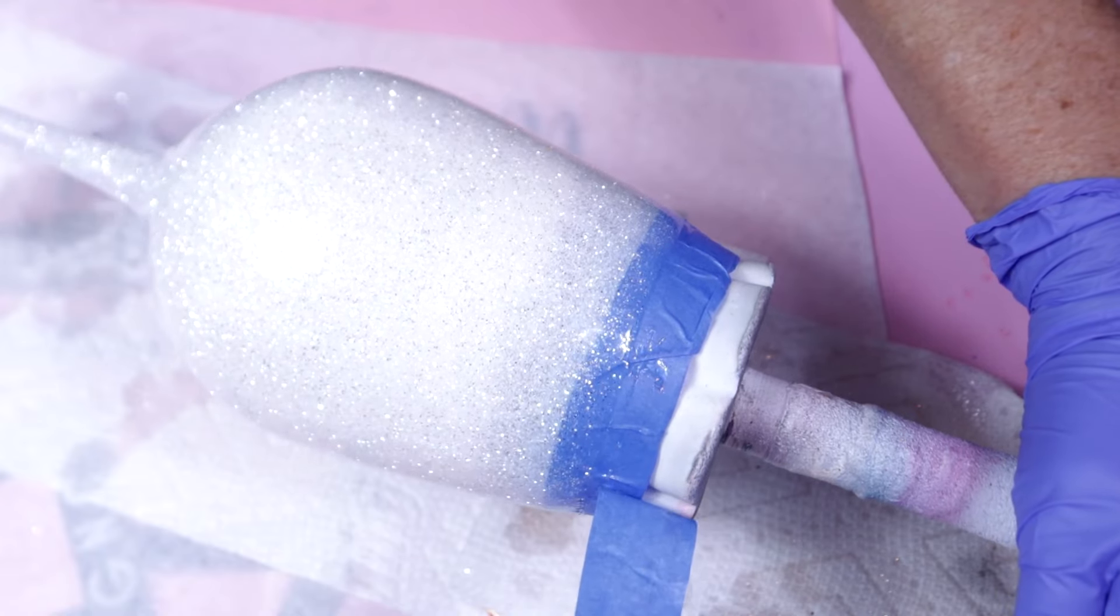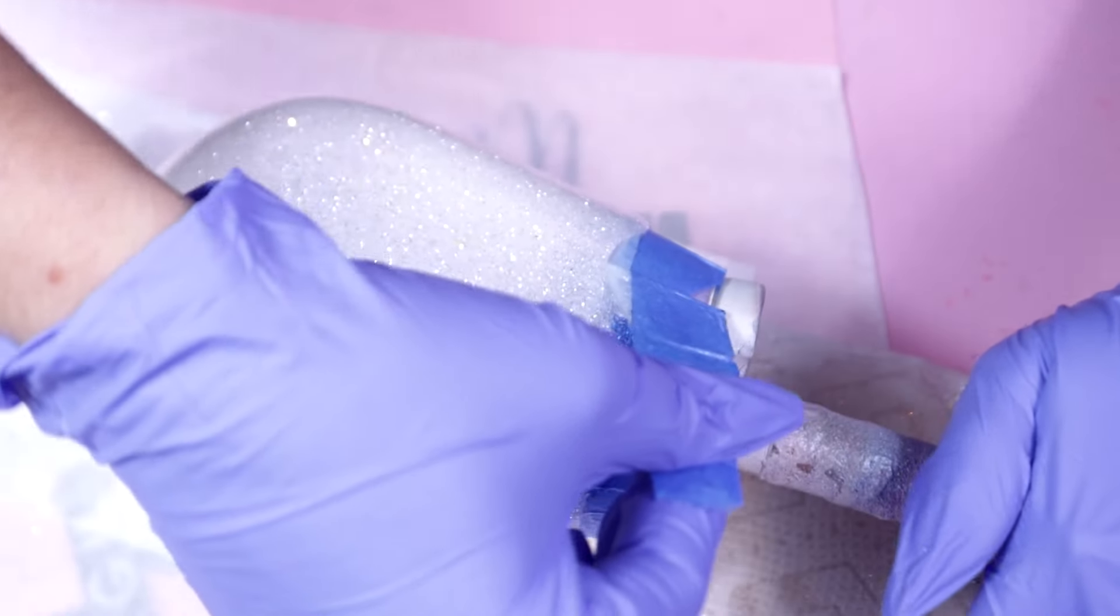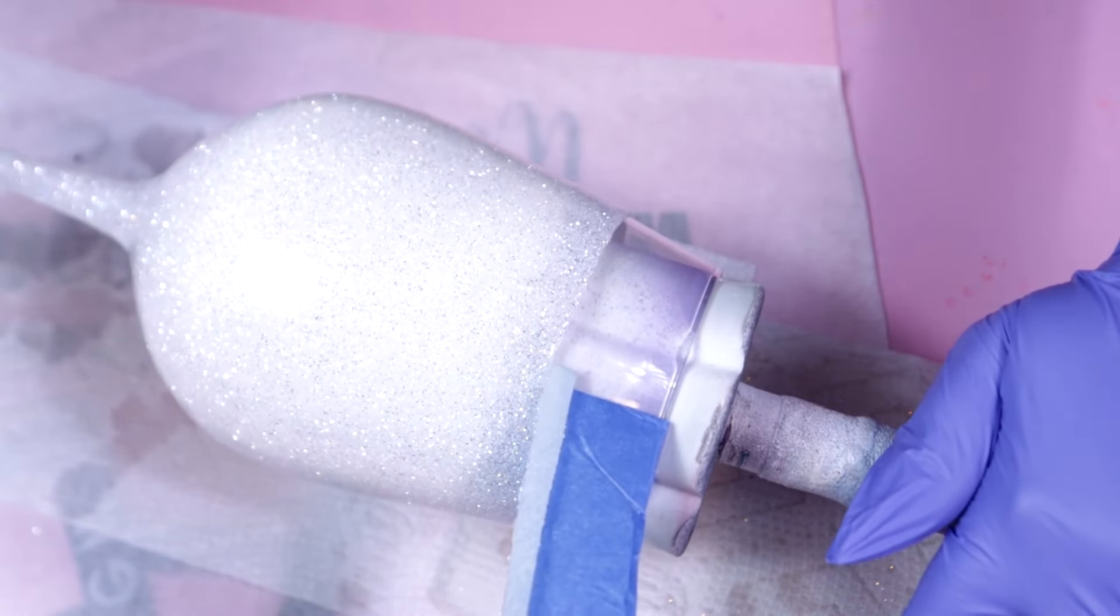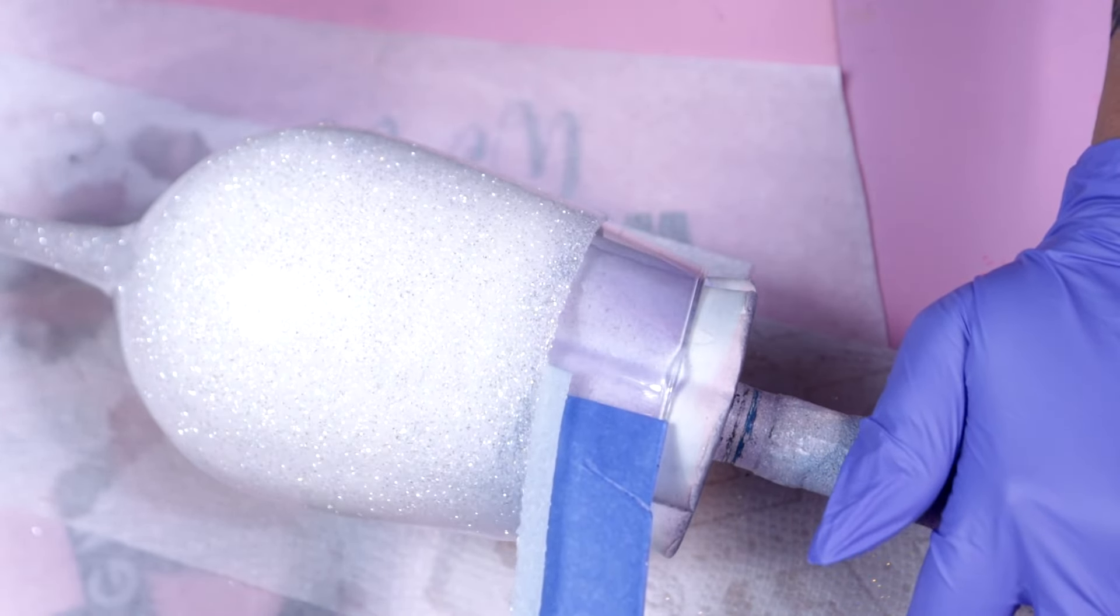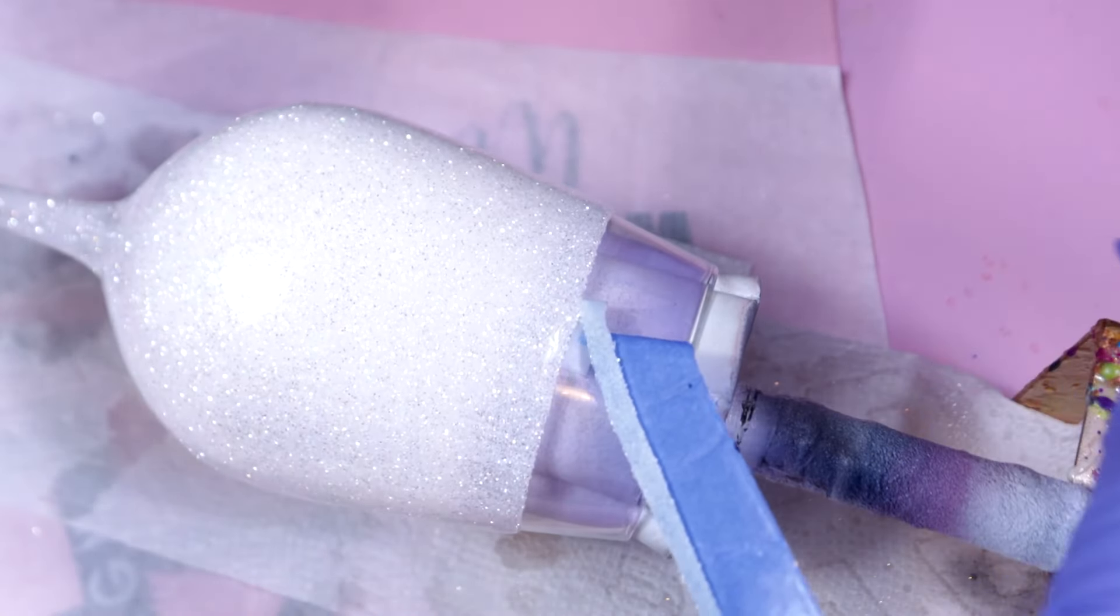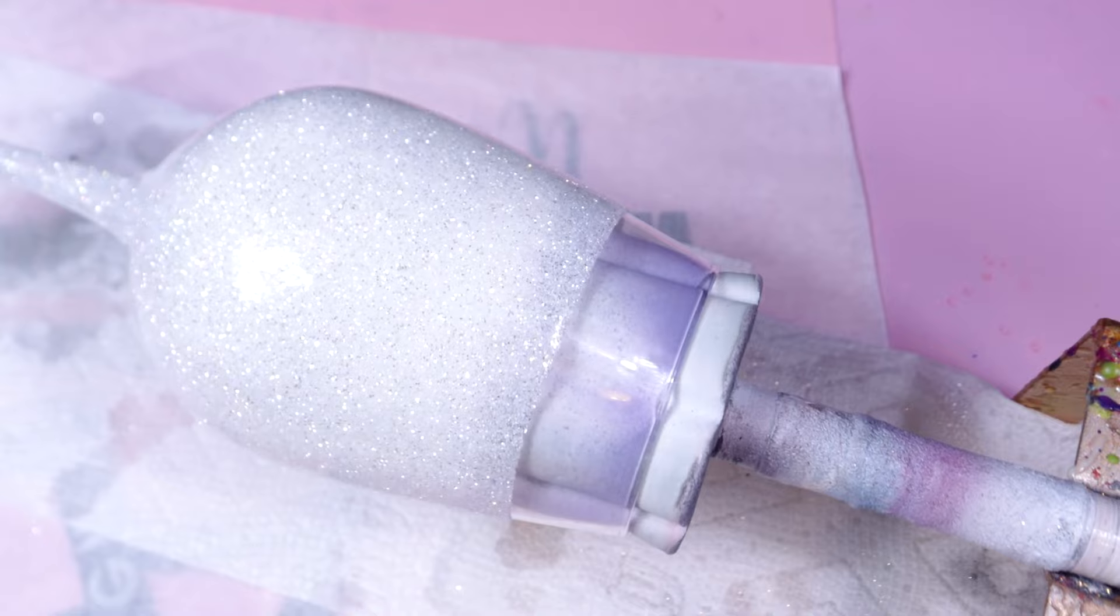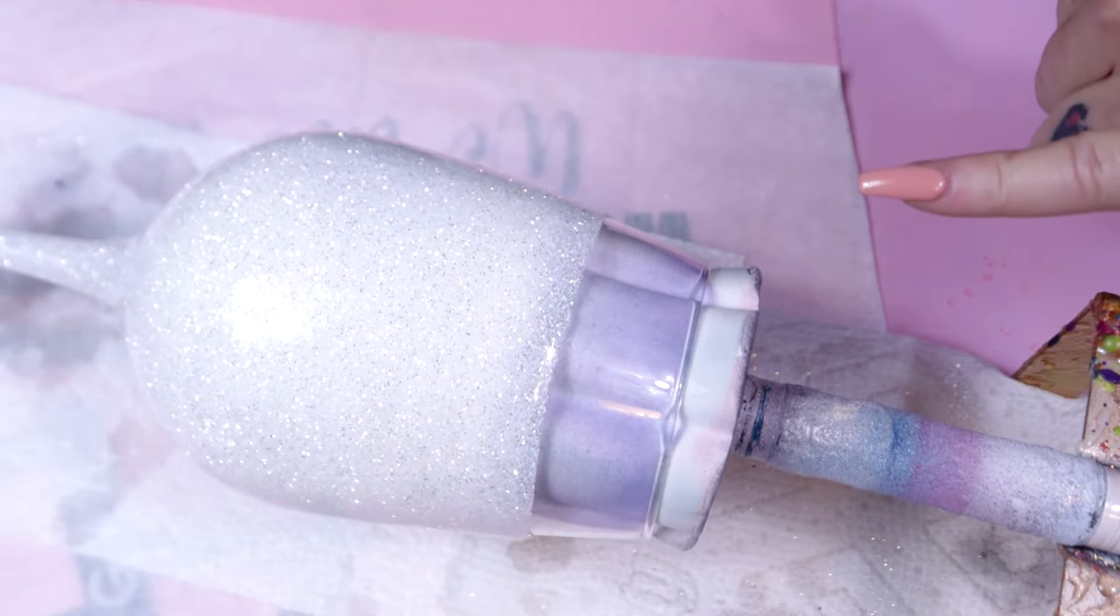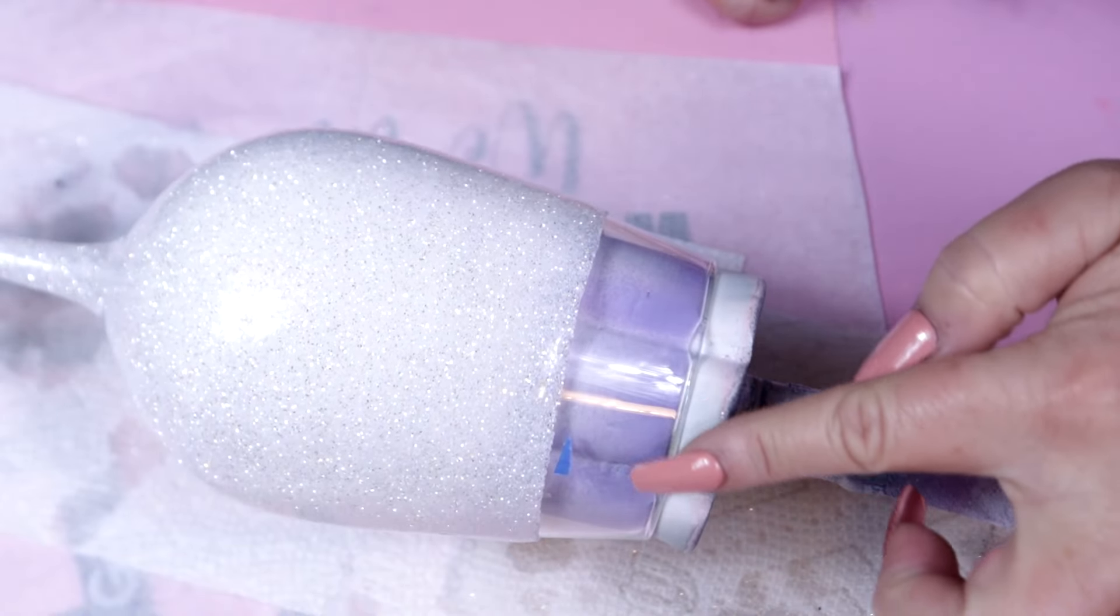Once I have removed all of the tape, we're just going to allow this to fully cure for six to eight hours. The colder your climate, the longer it's going to take. I want to share a little tip with you guys. For me, if it's cold or chillier and I come to my tumbler and it's still chilly, typically it's going to be tacky. Therefore, I will take it inside the house where the temperature is warmer and I'll wait a couple more hours, and by then it's no longer tacky.